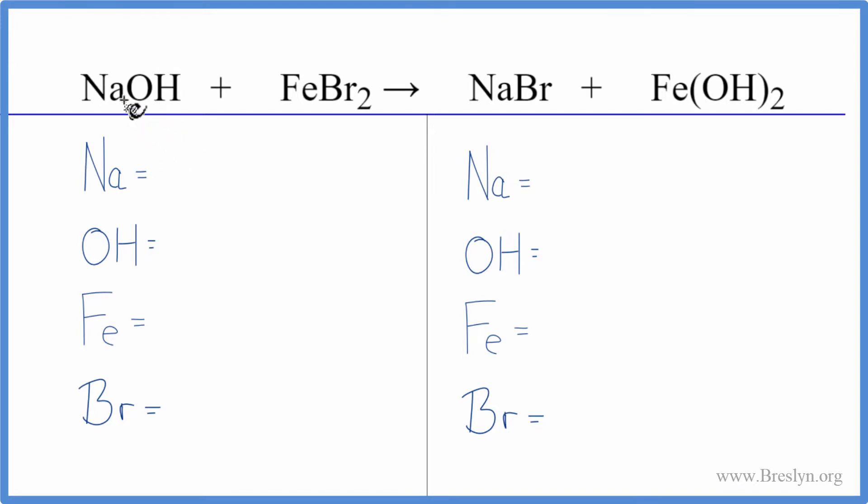We have one sodium, this hydroxide OH here and again here, so I'm just gonna count that as one item. I have one hydroxide ion right there, one iron, and then two bromides.